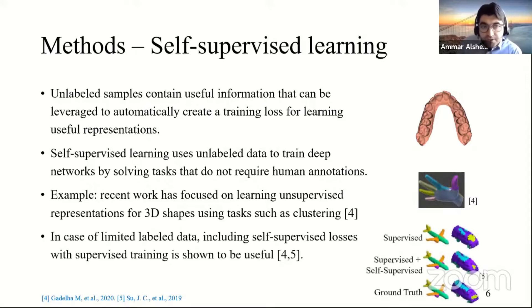And in recent work, there has been shown that in the case of limited labeled data, including self-supervised losses with supervised training improves the semantic segmentation result. For example, you can see in this picture that the semantic segmentation of the airplane when we add self-supervised training is closer to the ground truth compared with purely supervised learning.